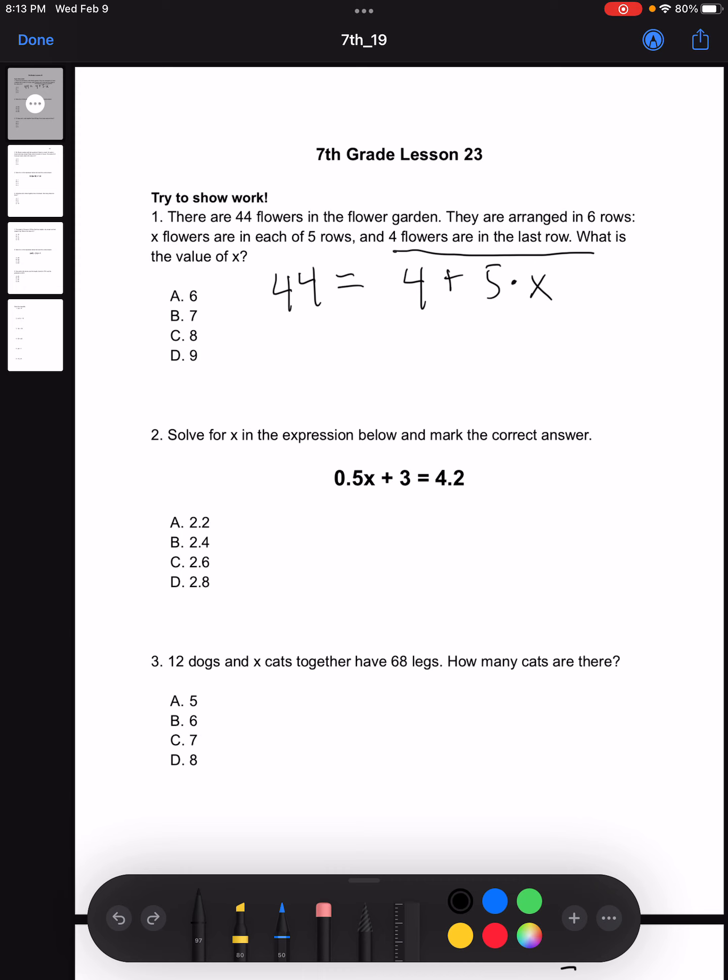So all we need to do now is solve for X. First, we subtract 4 from both sides, get 40 equals 5 times X. And now all we have to do is divide by 5. 8 is now equal to X and we know that our answer is C. All we did in this problem was convert the word problem into an algebraic equation and we just solved for X.